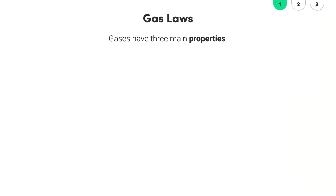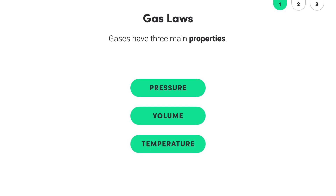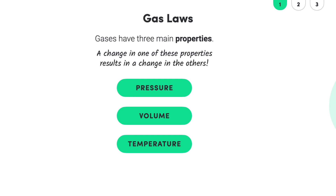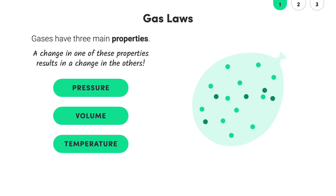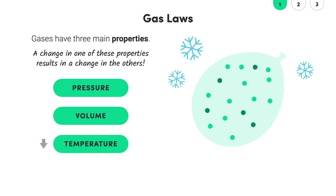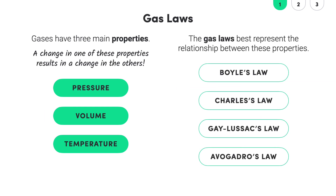Gases have three main properties: pressure, volume, and temperature. These properties are interconnected, and a change in one often results in a change in the others. Imagine a balloon — if we blow air into it, there are more air particles, so the pressure increases. The higher pressure causes the balloon to expand, that's an increase in volume. If we heat the balloon, the air inside expands again, increasing the pressure and the volume. If we cool it, the air contracts, reducing the pressure and volume. The gas laws best represent the relationship between a gas's pressure, volume, and temperature.